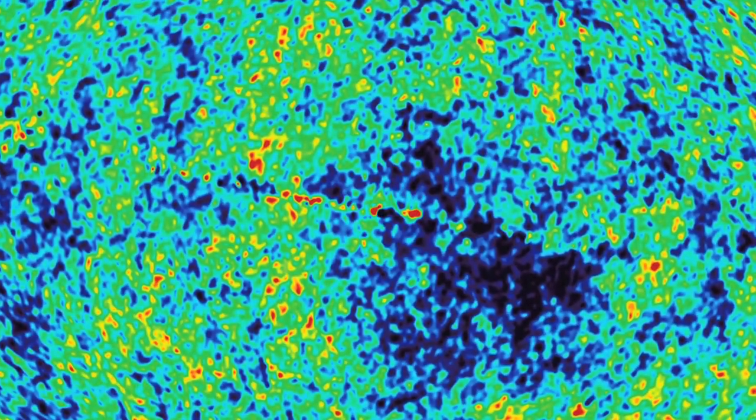The Universe came into being 13.7 billion years ago. About 400,000 years later, it had cooled enough to form the first atoms. The event created a sudden pulse of light that astronomers now measure as the cosmic microwave background. But then, the Universe went dark for millions of years.